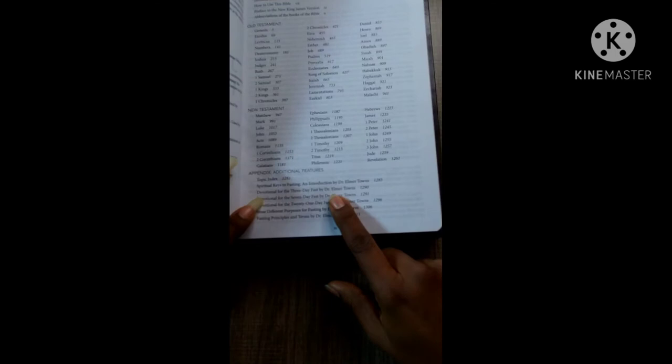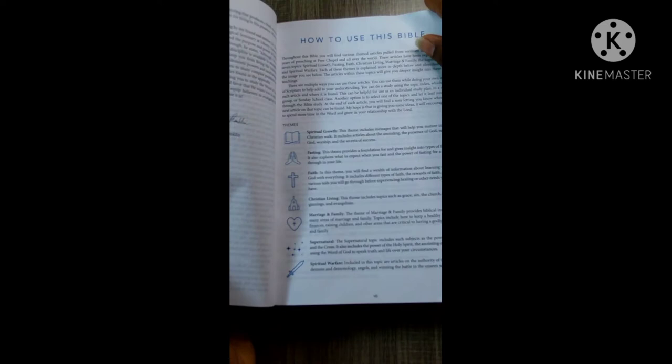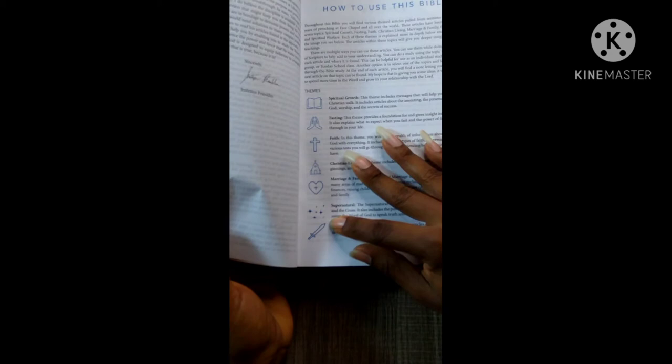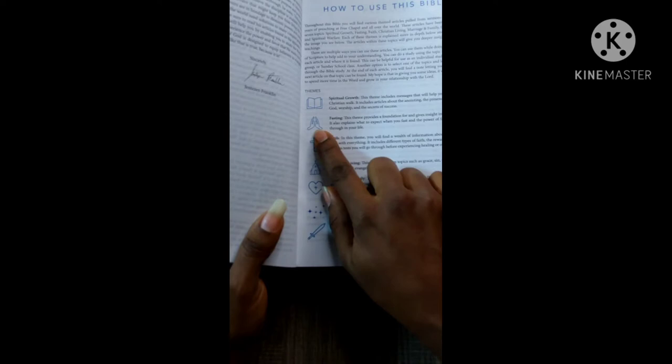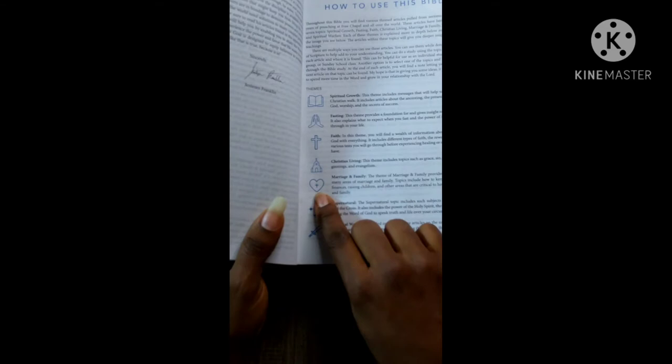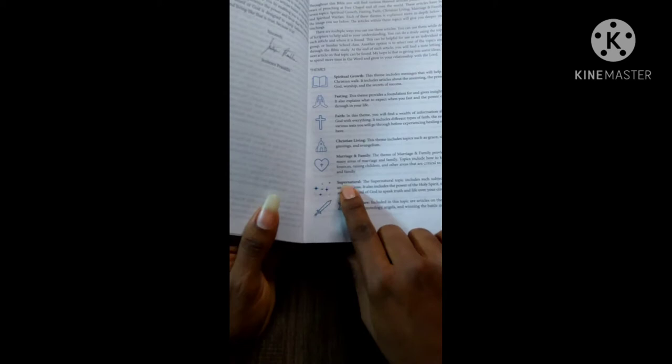Let's go in the beginning and look through it. This reminds me of another Bible I purchased where it had symbols, and I think it was the Spirit Bible. I did a review on it a while ago. It talks about spiritual growth—the hands are fasting, the cross is faith, the church is Christian living, the heart with a cross in it is marriage and family, the little stars talk about the supernatural, and the sword is spiritual warfare.